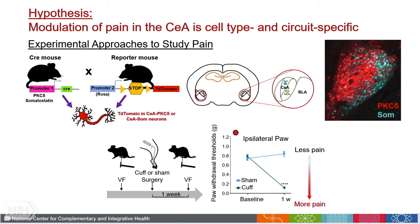The behavior model has been presented before, but basically we look at tactile hypersensitivity by measuring the force required to induce a withdrawal. More force means less pain — the animals can tolerate more — and less force means the animals are in more pain. The neuropathic pain model we use is the cuff model: we expose the sciatic nerve and place a small plastic tubing around the nerve, which makes the animals highly hypersensitive.